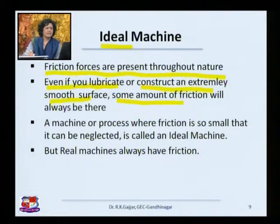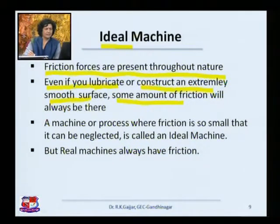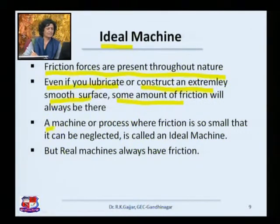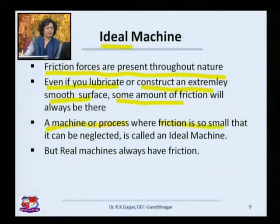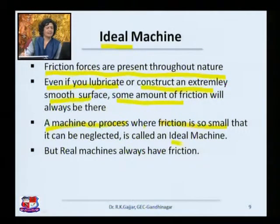It is impossible to make friction zero. But let us assume we have been able to do that. If you are able to reduce friction to zero, then a machine or any process where there is no friction, or it is so small that it can be neglected, is called an ideal machine.